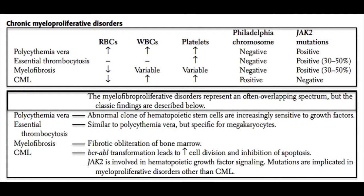We're ready to discuss the chronic myeloproliferative disorders. These are essentially malignant neoplasms — uncontrolled proliferation of certain cell populations — but we don't group them in the leukemia category because they don't really tend to go into the bloodstream; they tend to be issues in the bone marrow. There are four of them you should be aware of, and they represent an overlapping spectrum, so sometimes it's hard to tell which myeloproliferative disorder you're dealing with.